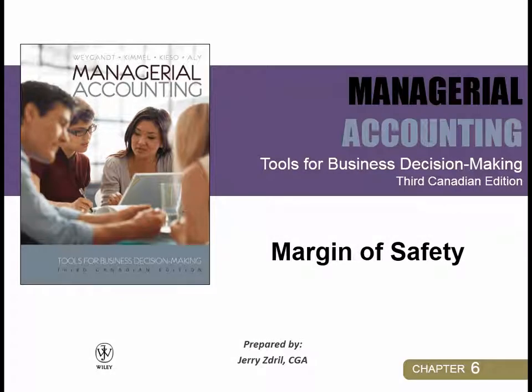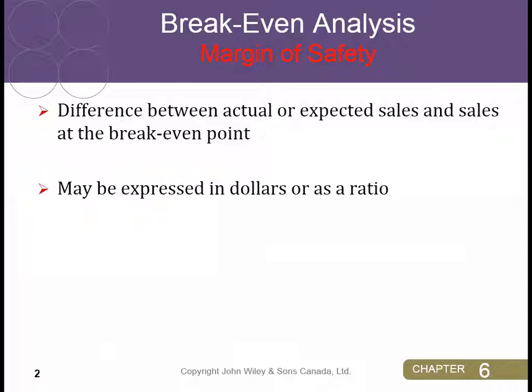Welcome to our margin of safety video. This is the third video in the playlist for Chapter 6 CVP Analysis. The first calculation covered how many units we need to produce to break even — neither making money nor losing money. The second covered how many units to produce to achieve a target net income. In this video, we talk about the margin of safety, which I like to refer to as your wiggle room — the difference between your actual or expected sales and the sales at the break-even point.